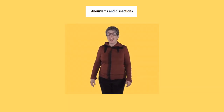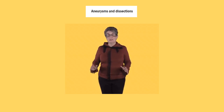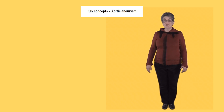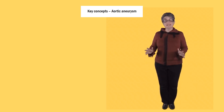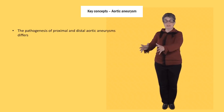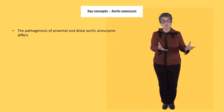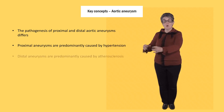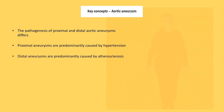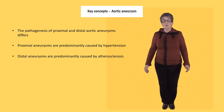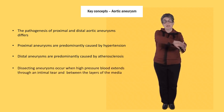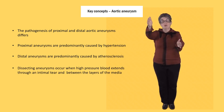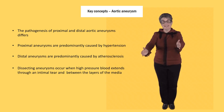Now let's move on to think about aneurysms and dissections. These are critical diseases in which patients have only minutes or hours to be saved. These are the key concepts in aortic aneurysms. The pathogenesis of proximal and distal aortic aneurysms differs — proximal aneurysms are predominantly caused by hypertension, whereas distal aneurysms are predominantly caused by atherosclerosis. Dissecting aneurysms occur when high pressure blood extends through an intimal tear and then spreads between the layers of the media, often over the aortic arch and down into the descending aorta.